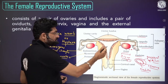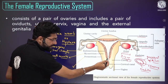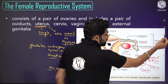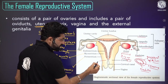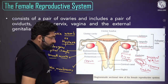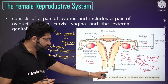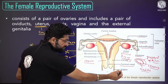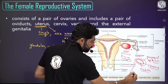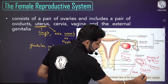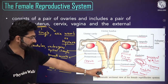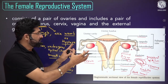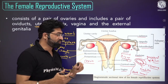The lower narrow part of the uterus is called the cervix, which leads to the vagina through the cervical canal. The cervical canal and the vagina together are called the birth canal. This covers the positioning and function of each part of the female reproductive system.